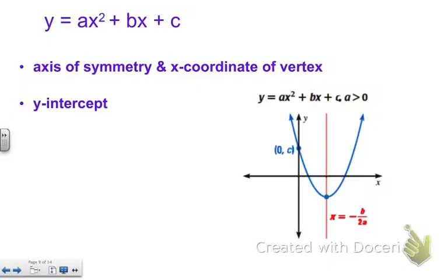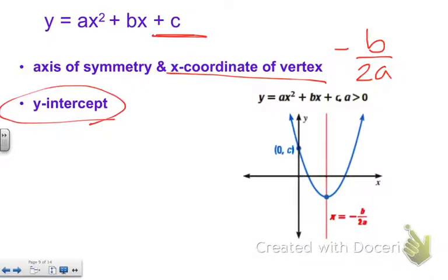So we talked about the axis of symmetry, but there's actually a formula that you can use to find it, and that's negative b over two a. And the axis of symmetry since it goes right through the vertex also tells us the x coordinate of the vertex. And then the y intercept is always the c, so it's always plus whatever that number is tells us where it crosses the y axis.